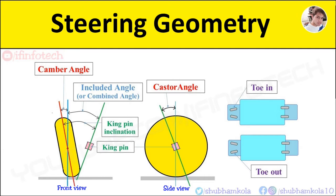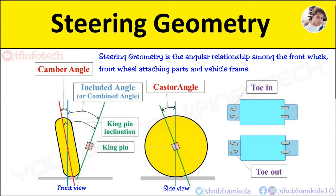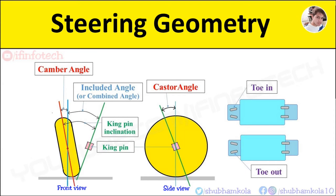So here, figure shows front view and side view of front wheel. So first is camber angle.